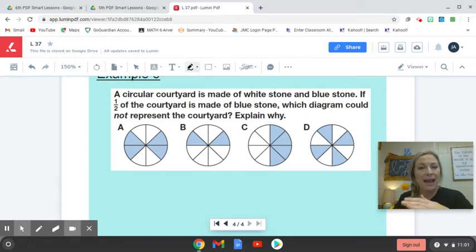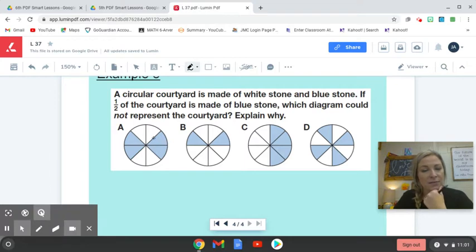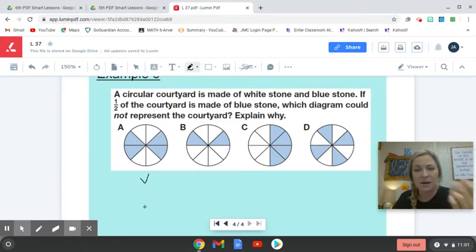So I know that any picture here, no matter what order or what design, half of them, four sections need to be blue. If four sections are not blue, that does not represent one half. So let's take a look. Let's look here. Out of the blue stone, I have one, two, three, four. Yep, that's right. That represents one half. Let's look here. One, two. There it is right there.